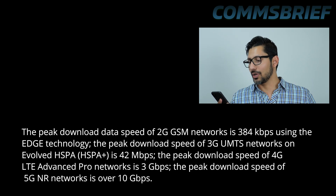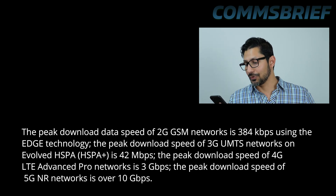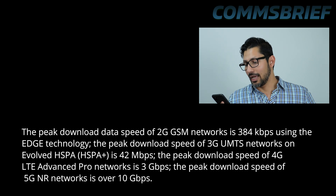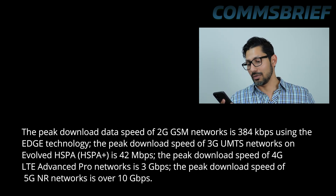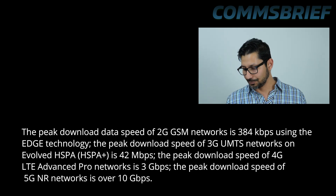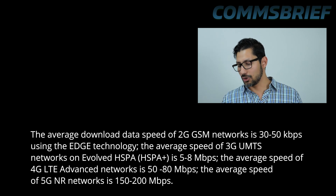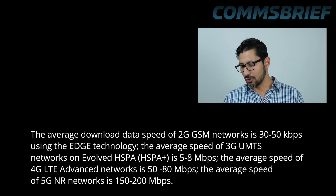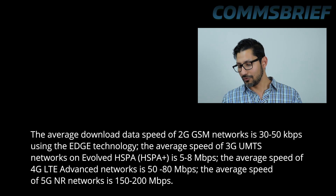In this video, we will look at peak and average speeds of 2G, 3G, 4G, and 5G. The peak download speed of 2G GSM networks is 384 kbps using EDGE. For 3G UMTS on HSPA+, it is 42 Mbps, and for 4G LTE Advanced Pro it is 3 Gbps. 5G NR networks reach over 10 Gbps peak. Average speeds are: 2G EDGE at 30–50 kbps, 3G HSPA+ at 5–8 Mbps, 4G LTE Advanced at 50–80 Mbps, and 5G NR at 150–200 Mbps.